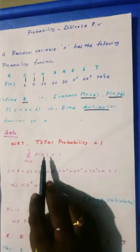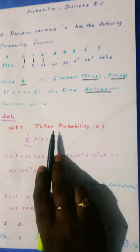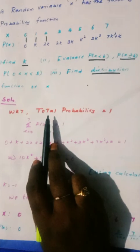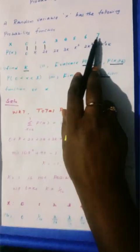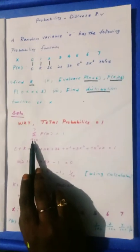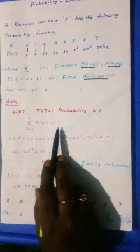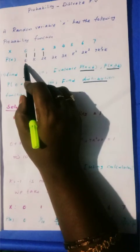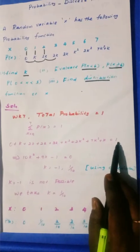The constant is found using concept number 1: total probability equals 1. For x from 0 to 7, the sum of P(x) equals 1. So we add all values together, and the sum of all values must equal 1.